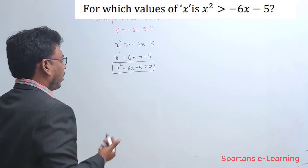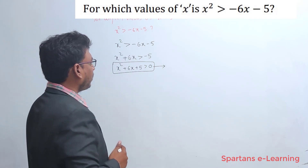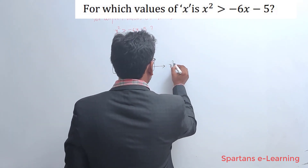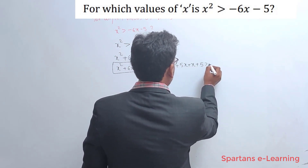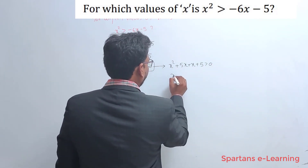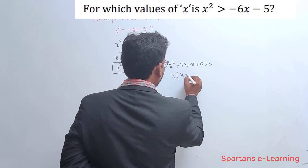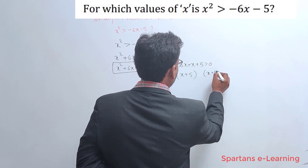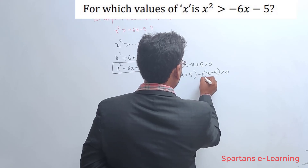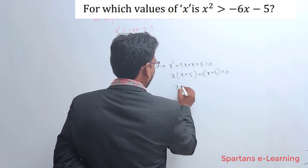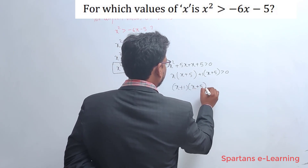It's given that x² > -6x - 5. I will add +6x on both sides: x² + 6x > -5. Then add +5 on both sides: x² + 6x + 5 > 0. Now let us factor this: x² + 5x + x + 5 = x(x+5) + 1(x+5) = (x+1)(x+5) > 0.